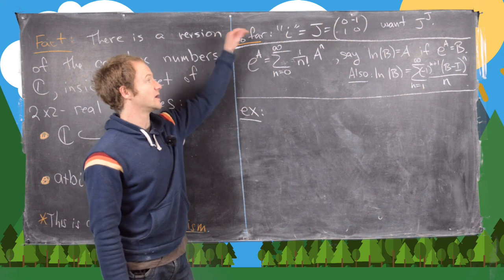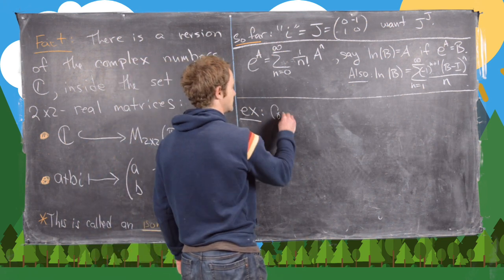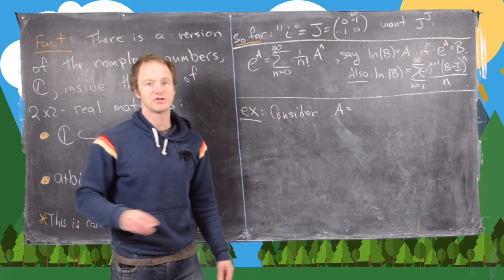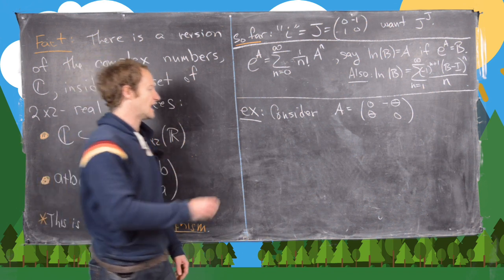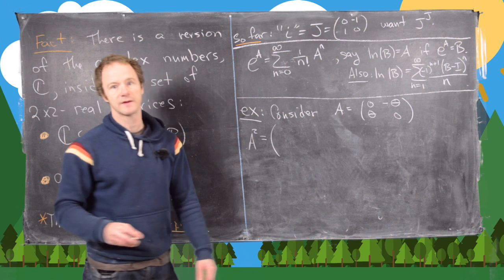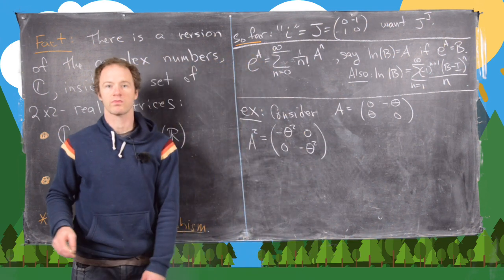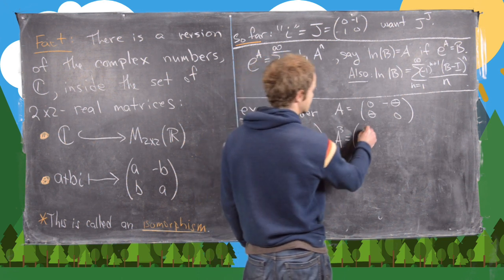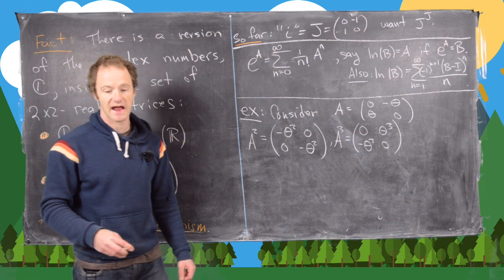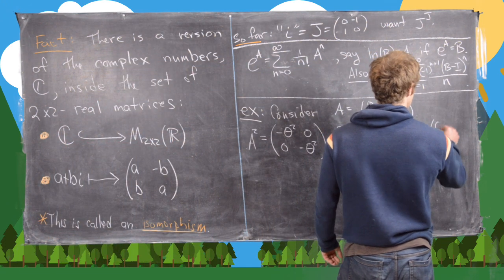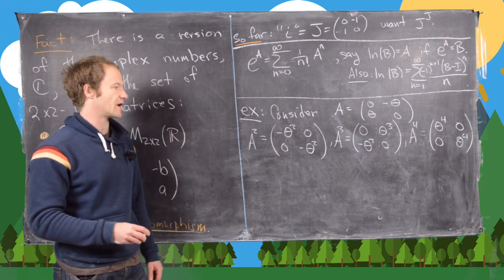Let's consider the special matrix A_θ = [0, -θ; θ, 0]. We compute: A_θ² = [-θ², 0; 0, -θ²], A_θ³ = [0, θ³; -θ³, 0], and A_θ⁴ = [θ⁴, 0; 0, θ⁴]. This gives us good motivation for what an arbitrary power of A will look like.